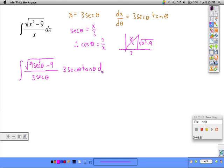You may look at this and say that doesn't help us, but actually it does, because the 3 secants cancel out. Under this square root, we can factor out a 9. We don't have a denominator anymore. This becomes 3 times the tangent of theta times tan theta d theta.